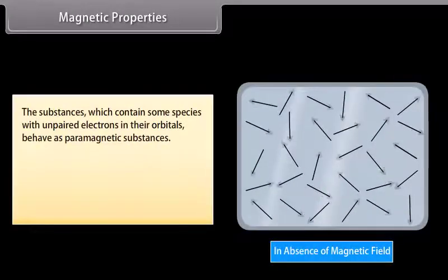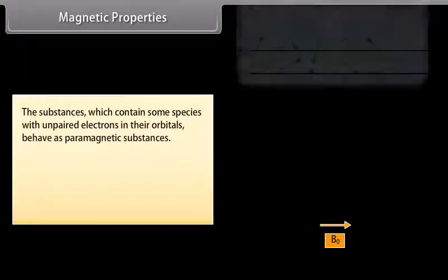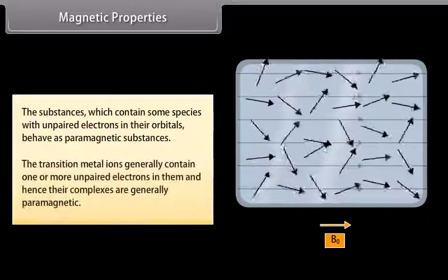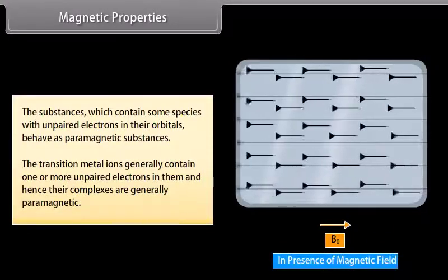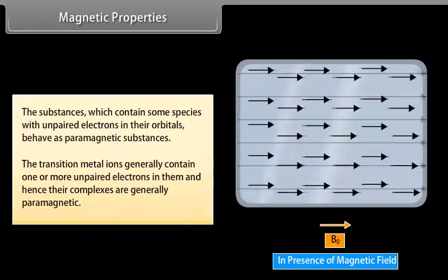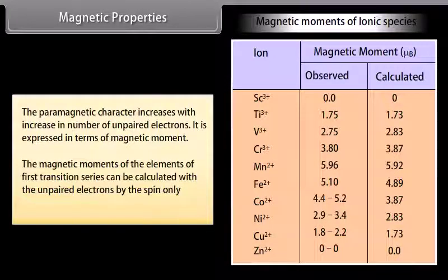Substances which contain unpaired electrons in their orbitals behave as paramagnetic substances. The transition metal ions generally contain one or more unpaired electrons, and hence their complexes are generally paramagnetic. The paramagnetic character increases with the increase in number of unpaired electrons and is expressed in terms of magnetic moment. The magnetic moments of elements of the first transition series can be calculated using the spin-only formula.